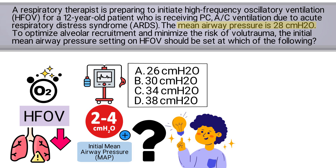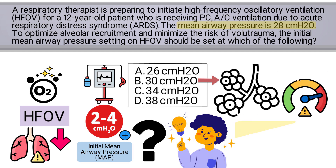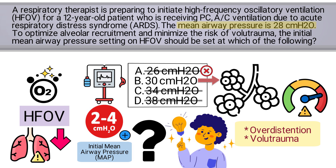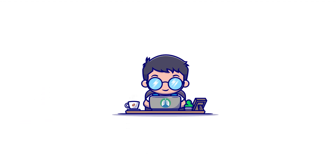Therefore, by setting the new MAP at 30 centimeters of water pressure, you can optimize alveolar recruitment without significantly increasing the risk of over-distension or volume trauma. Setting the pressure too low may not adequately recruit alveoli, while higher settings could lead to overinflation and lung injury. The correct answer is B: 30 centimeters of water pressure.